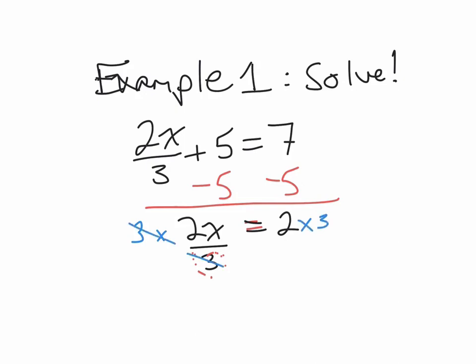These 3s cancel out. And what I'm left with is 2x is equal to 6. Finally, I need to get x fully isolated or by itself. So I know that the operation between 2 and x is multiply. So the opposite of that operation is division. So I'll divide by 2 and I'll divide by 2. 6 divided by 2 is 3.